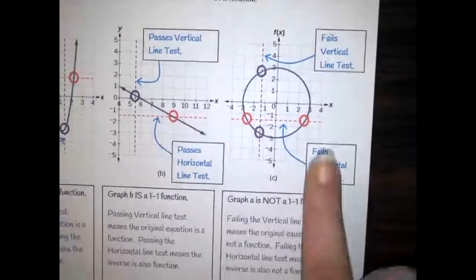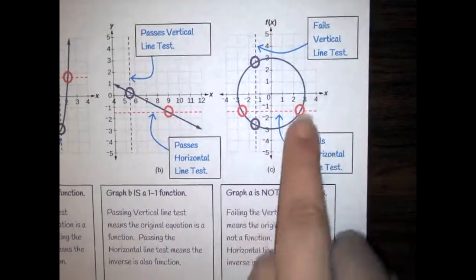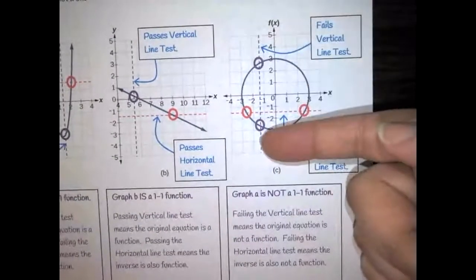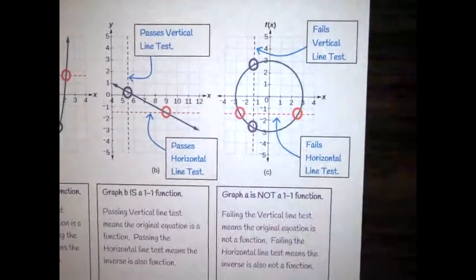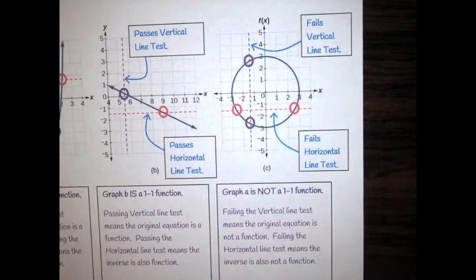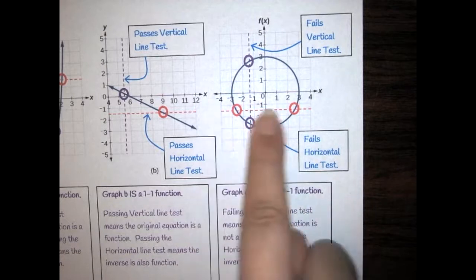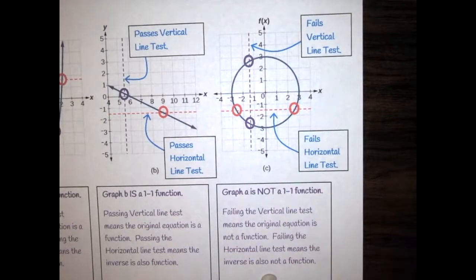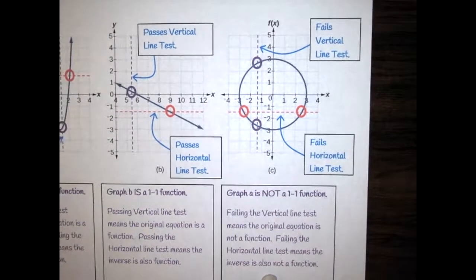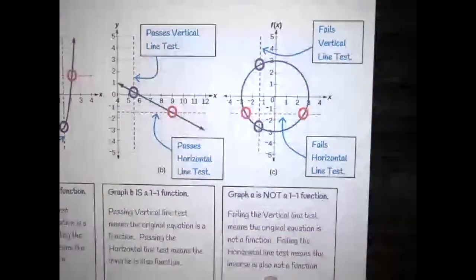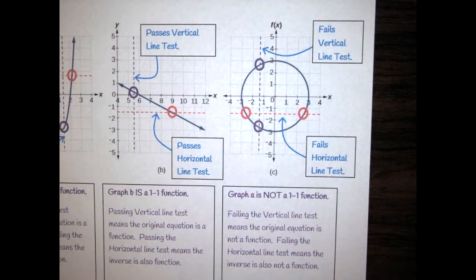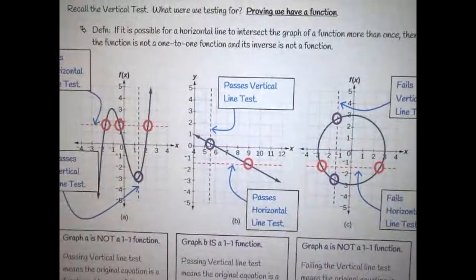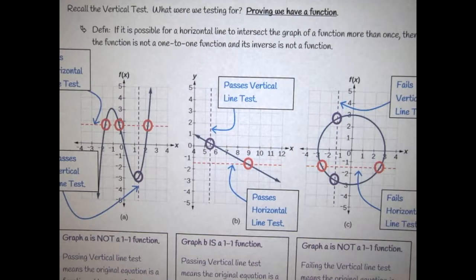The third possibility: the vertical line test fails — this is not a function. However, we still check the horizontal line, which also passes at two points — failing that test as well, meaning the graph is not one-to-one. Failing the vertical line test means the original equation was not a function. Failing the horizontal test means the inverse is not a function. Remember, this does not mean you don't have an inverse — it means the inverse was not a function.